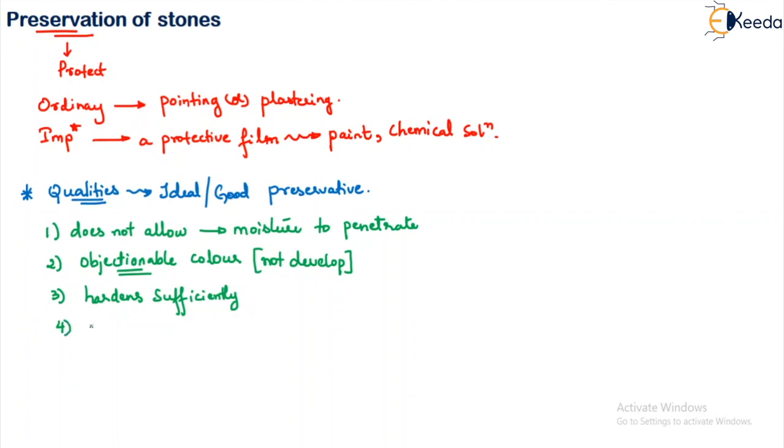Then, whenever you apply, you have to easily be able to penetrate it to the stone surface. Then, the fifth point is it should be very, very economical for the application because the type of structures what we use will be very huge.